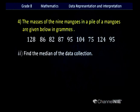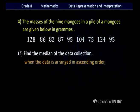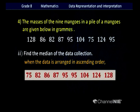Second question: find the median of the data collection. What is median? When the data is arranged in ascending order, the median is the mid value of the collection. First we rearrange in ascending order: 75, 82, 86, 87, 95, 95, 104, 124, 128. We need to find the mid value. Since there are 9 data — an odd number — we can easily find the mid value.